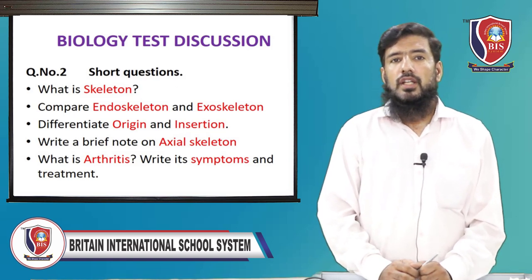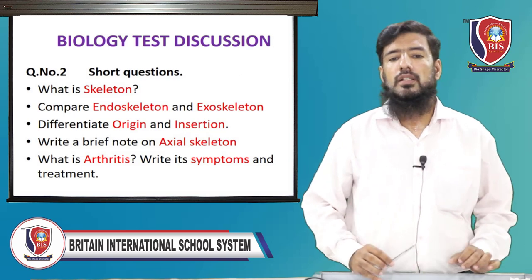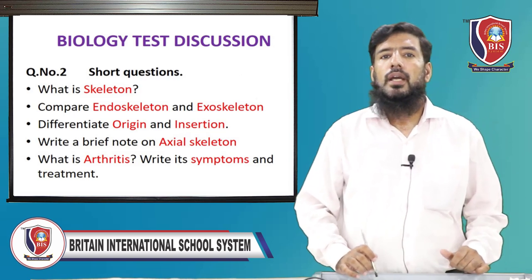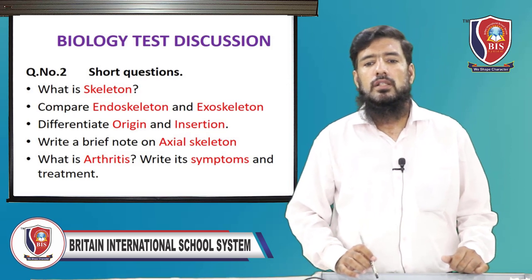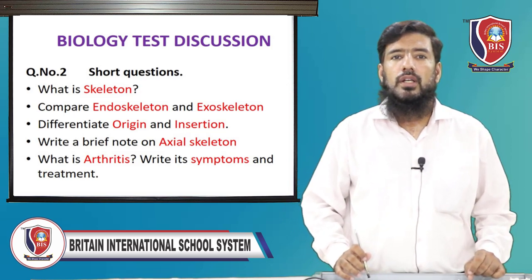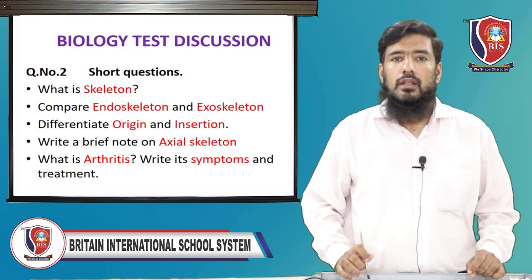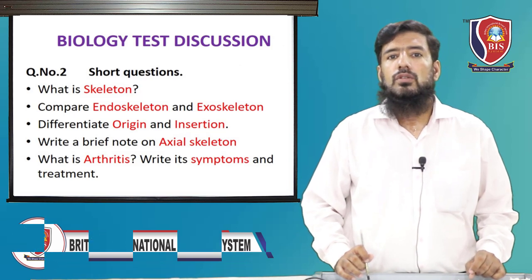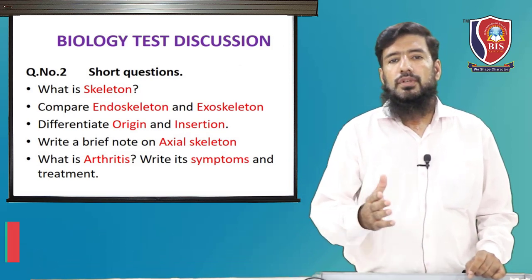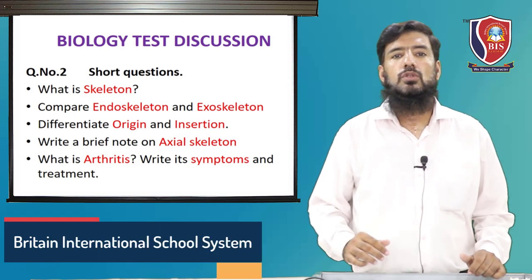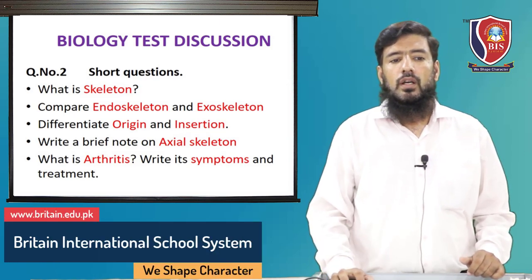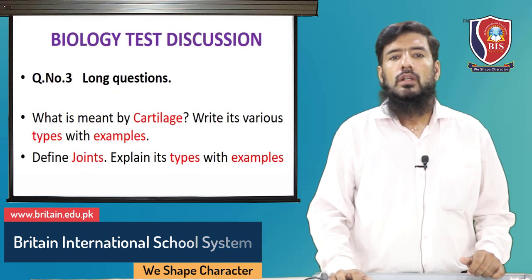Short question: what is arthritis? Write its symptoms and treatment. The definition is: inflammation of the joints is called arthritis. Symptoms include pain and stiffness in the joints. Treatment is done with the help of anti-inflammatory medicines and pain killers. These symptoms and treatment can also appear as MCQs.